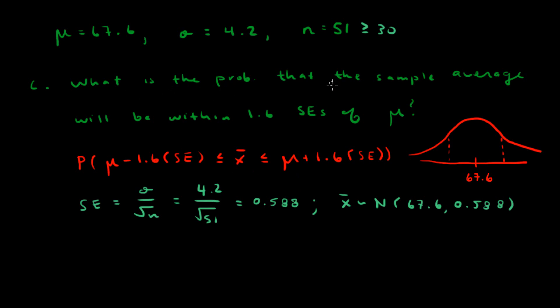Now the question is what is the probability that the sample average will be within 1.6 standard errors of mu, 67.6. You can think of that number as represented by this expression. We can rewrite this entire expression if we plug in 67.6 for mu and 0.588 for the standard error. This becomes the probability that x bar is between 66.659 and 68.541.